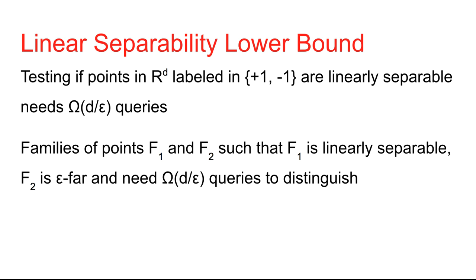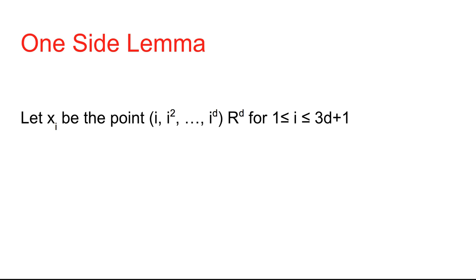To prove the lower bound, we give two families of points f1 and f2 such that f1 is linearly separable while f2 is epsilon-far from linearly separable. Epsilon-far means either an epsilon fraction of points need to be removed, or an epsilon fraction of labels need to be changed. We want any algorithm to need at least d / epsilon queries to distinguish between these families. We use special points x_i in R^d with coordinates (i, i², ..., i^d), taking 3d+1 such points.